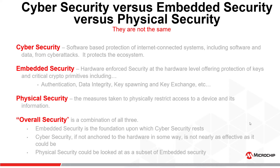Cybersecurity is usually expensive and needs frequent updates. Embedded security is hardware-enforced security at the hardware level, offering hardware protection of keys and crypto primitives. A crypto primitive would be considered authentication, data integrity, key spawning, or key exchange. It is an immutable hardware-enforced mechanism to prove the identity and genuineness of a device. Embedded security is built into the PCB and firmware of the system. It serves as an anchor to cybersecurity — without it, cybersecurity has no way of truly telling what is genuine and what is not.